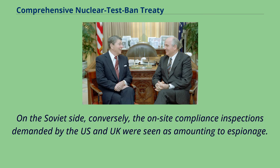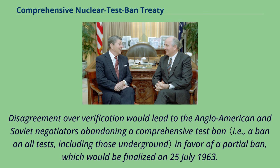On the Soviet side, conversely, the on-site compliance inspections demanded by the U.S. and U.K. were seen as amounting to espionage. Disagreement over verification would lead to the Anglo-American and Soviet negotiators abandoning a comprehensive test ban in favor of a partial ban, which would be finalized on July 25, 1963.